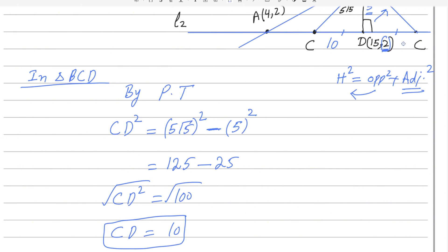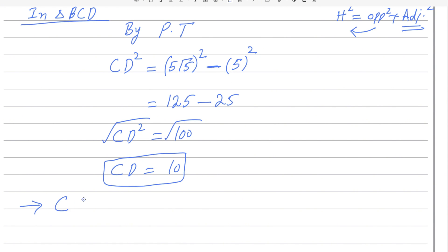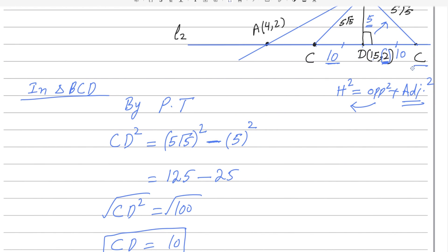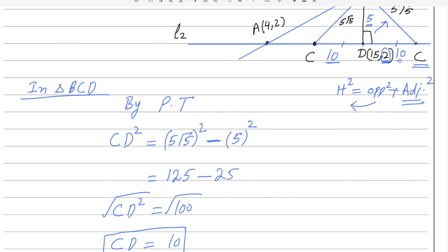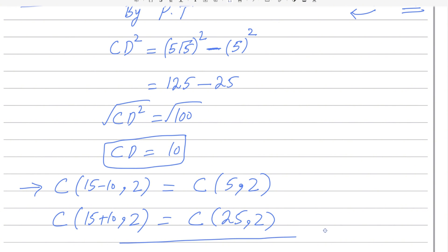So the length CD is 10 in both directions. D is at x = 15, so the left-side C is at 15 minus 10 = 5, giving coordinates (5, 2). The right-side C is at 15 plus 10 = 25, giving coordinates (25, 2). Both share y-coordinate 2 since they lie on the horizontal line L2.